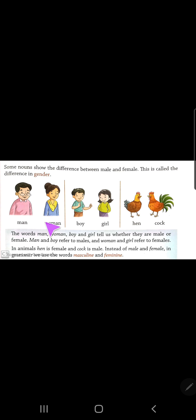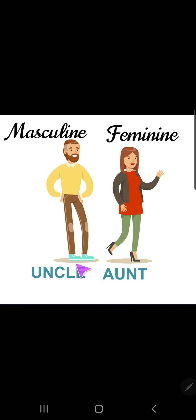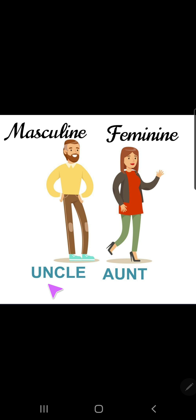Let's see some examples. Masculine and feminine: uncle — uncle ka aunt ho jayega. Uncle, aunt. Okay?